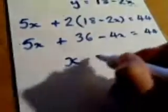Tidying this up, simplifying it, we get x plus 36 equals 44. Take away 36 from each side leads us to x will equal 8.